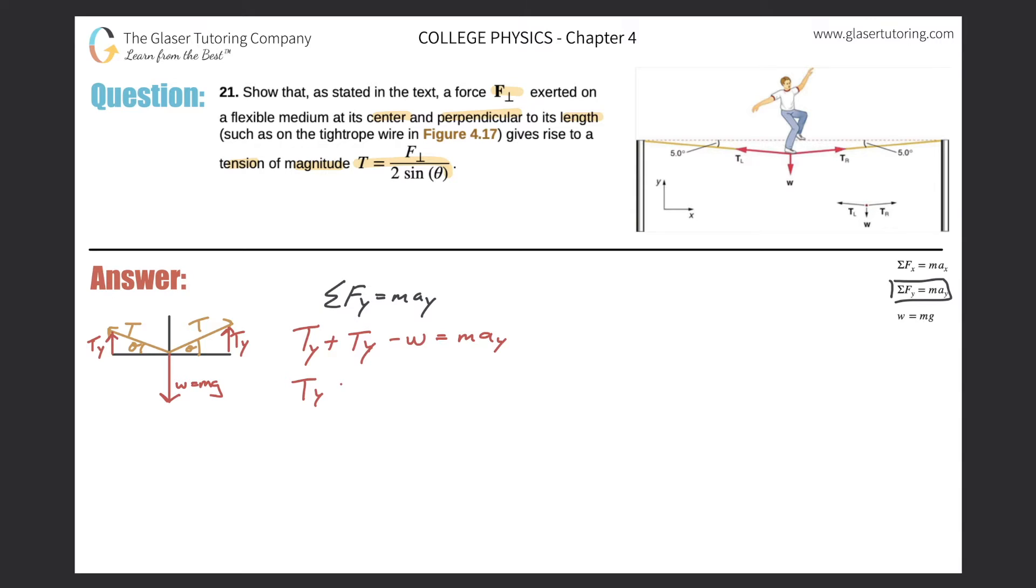So tension in the y plus tension in the y minus W. Now that W they're talking about is really the force perpendicular - the perpendicular force. Notice in the picture that his weight is perpendicular to that axis. So I'm going to write F perpendicular equals m*a_y. But is there any acceleration in the problem? No, so this becomes a big old fat zero.